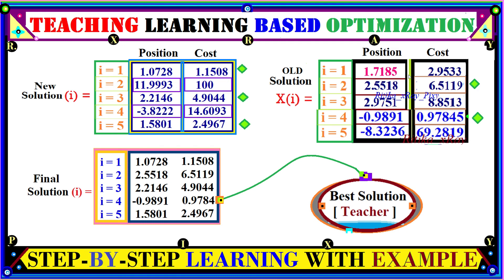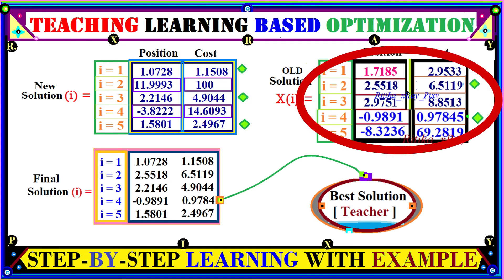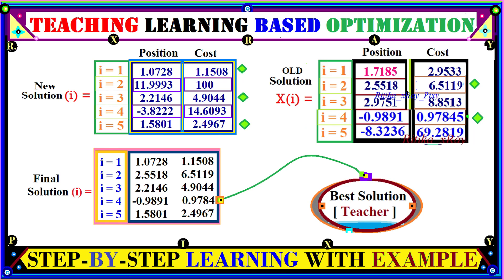We now have the new solutions computed in the learner phase and the older solutions from the teacher phase, and we compare their costs. For the first learner, the new value is better. For the second learner, the old value is better. For the third learner, the new value is better. For the fourth learner, the older value is better. For the fifth learner, the new value is better. After updating, we have the final population for five individuals, and among all the best learner is the fourth one — which we will consider as the teacher in the next iteration.